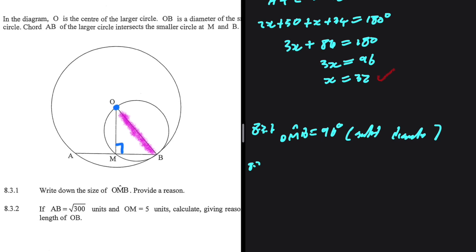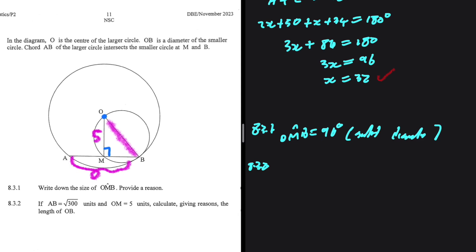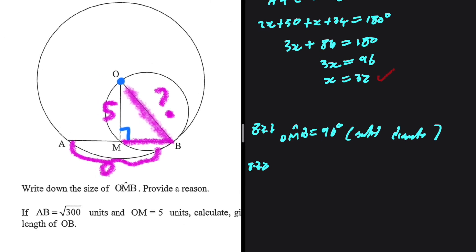The question that follows, 8.3.2: If AB equals square root of 300, so this entire AB is square root of 300, and OM is 5 units, calculate, giving reasons, the length of OB. Okay, we want to find OB. It seems like we can use theorem of Pythagoras here because we have an angle of 90 degrees, but can we find the length of MB? Because what we are looking for now is the length of MB.